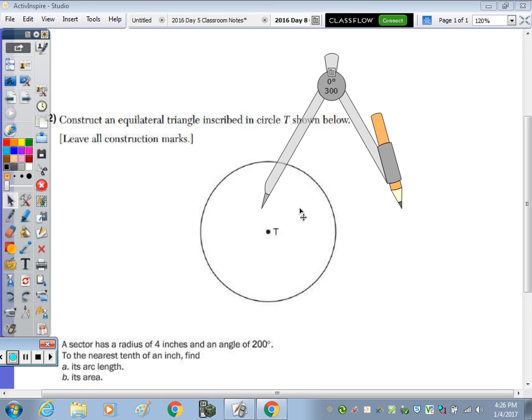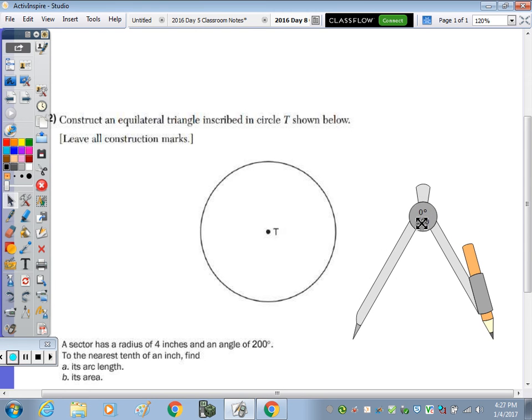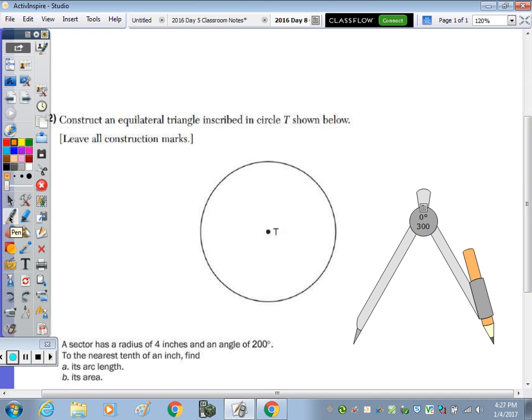To construct an equilateral triangle inscribed in a circle, so given circle T shown below, to construct an equilateral triangle inscribed within this circle, we're going to use the construction for the inscribed regular hexagon.